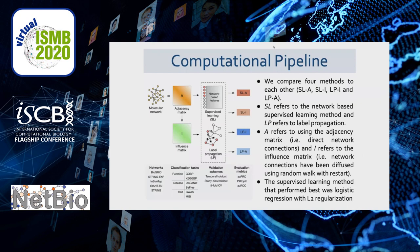The computational pipeline starts with a molecular network. We can either represent it as an adjacency matrix, referred to as A, where connections come directly from the network, or we can create an influence matrix where we diffuse edge information using a random walk kernel, referred to as I. The rows of these matrices serve as examples for a machine learning algorithm where genes are positively or negatively labeled for a given function, trait, or disease, and the columns are the network connections. We can also directly use these networks in label propagation.